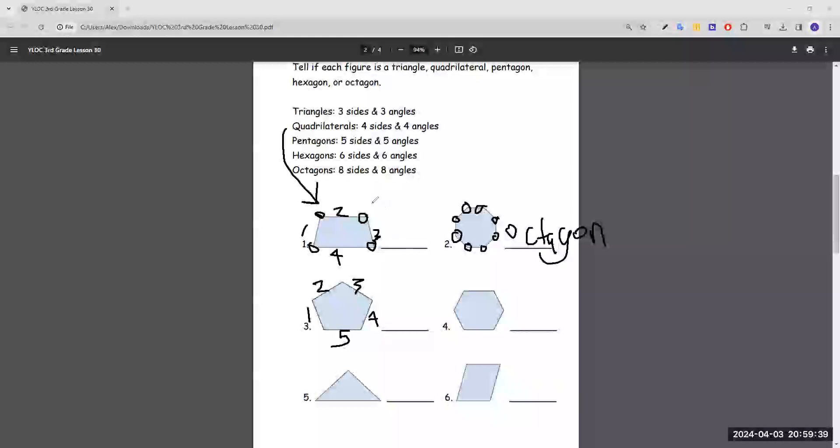And in this exercise, we don't need to count both the sides and angles, because we can see here in the shapes that the sides and angles are all the same amount. So if we count the sides, then we basically count the number of angles too. So five sides would be a pentagon.